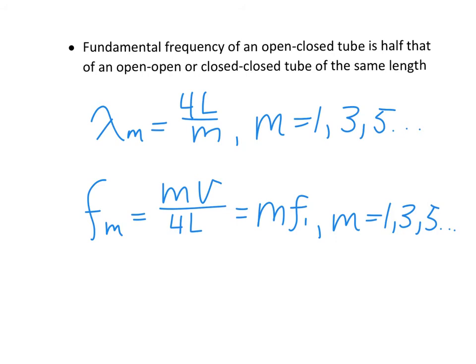If you're having trouble remembering that, just think that for an open-closed tube, M is not the number of antinodes. M is twice the number of antinodes. So that's why this comes out to be four instead of two.